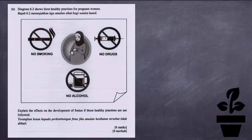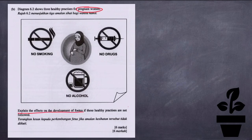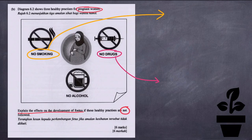Next, we move on to the next question. Question B: diagram 6.2 shows 3 healthy practices for pregnant women. Explain the effect on the development of the fetus if these healthy practices are not followed. There are 3 practices shown: smoking, drugs, and alcohol.